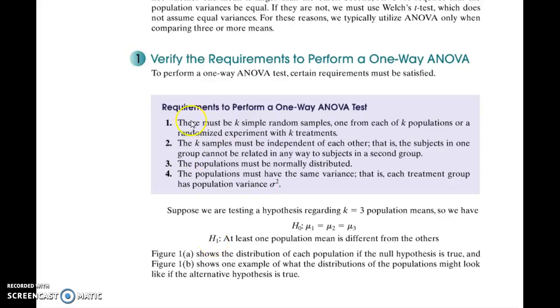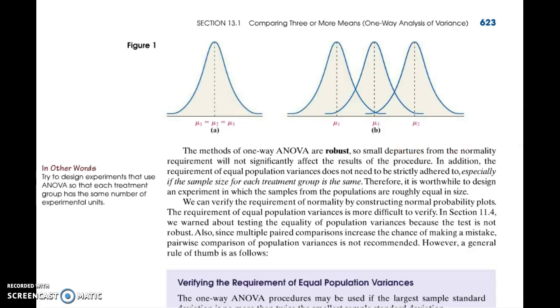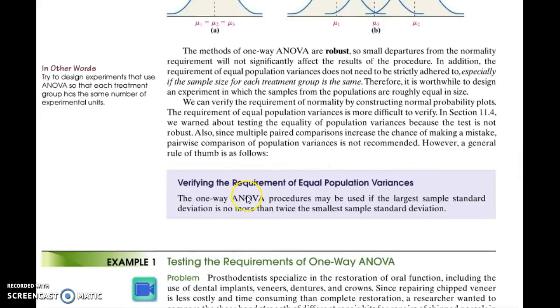And then here are the requirements. This is on page 622, the requirements needed in order to perform an ANOVA test. It's difficult to verify number four here. So look at the next page, 623, to see how we do that. What we're going to do is look at the sample standard deviations. Make sure the largest sample standard deviation is no more than twice as big as the smallest sample standard deviation.